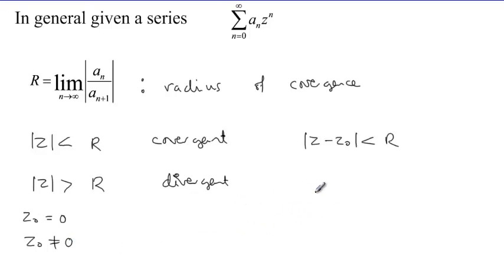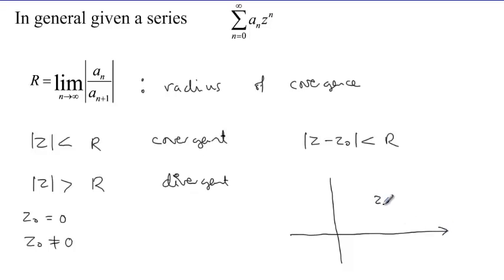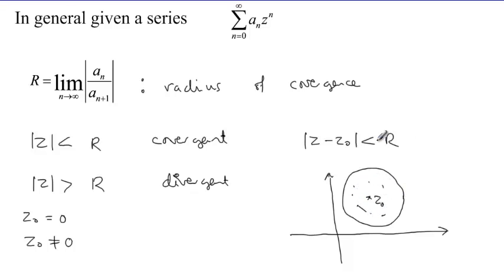When we have the series expressed in the form of (z minus z_0) to the power n, we say the series is centered at z_0 different from 0. We should be able to represent this situation diagrammatically. On a complex plane, pick a particular point z_0, then consider a circle of radius r. Within the circle the series is convergent, and outside the circle the series will be divergent.